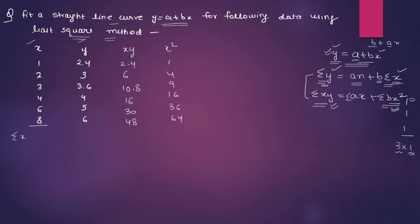Now all the sums which you need you can make them up. Sigma x, if you add them up it will be 24. Sigma y is also 24. Sigma xy is 113.2 and sigma x square is 130.